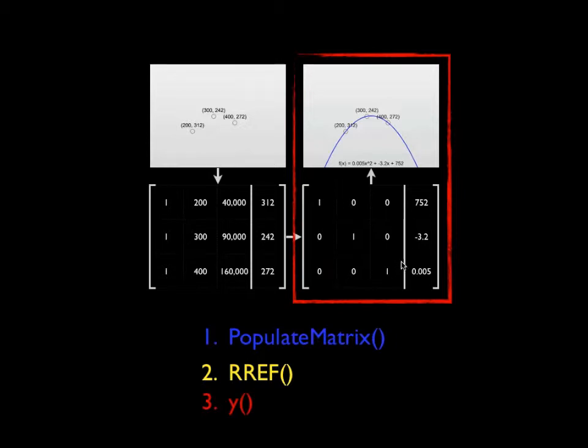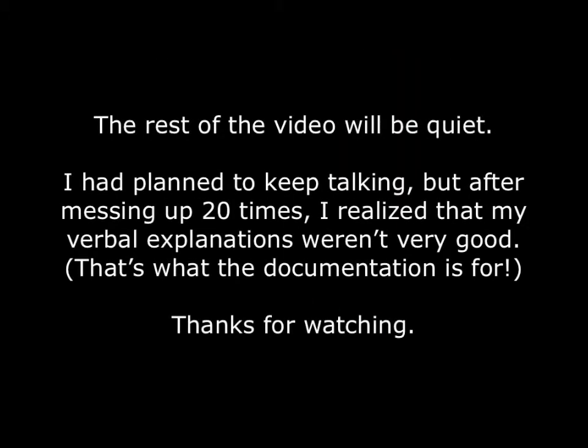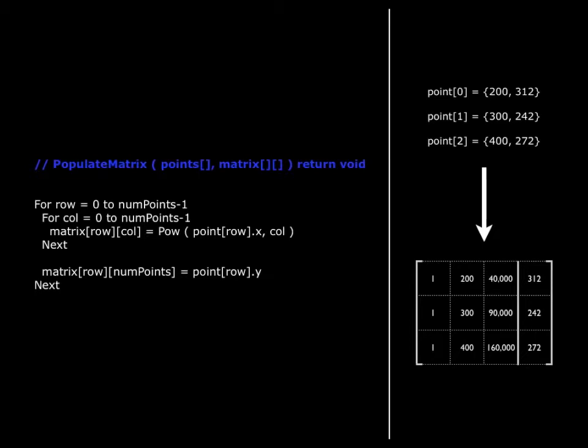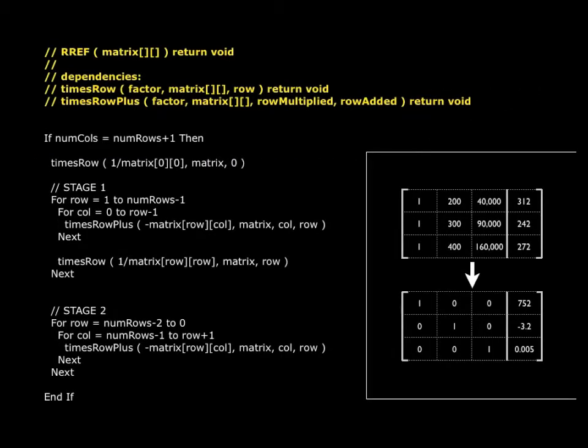And Y takes the transformed matrix, and it uses the coefficients in the last column as coefficients of a polynomial.